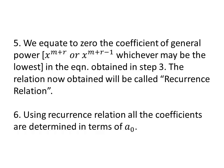We equate to 0 the coefficient of the general power of x. The general power of x can be x to the power m plus r, or x to the power m plus r minus 1, whichever may be the lowest in the equation obtained in step 3. So in the equation that comes after simplification in step 3, we equate the coefficient of the general power of x to 0. From this we get a relation — this relation is called the recurrence relation. Using this recurrence relation, we can express all remaining coefficients in terms of a₀.